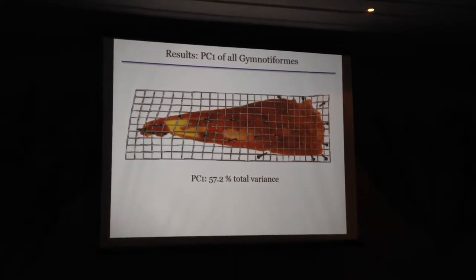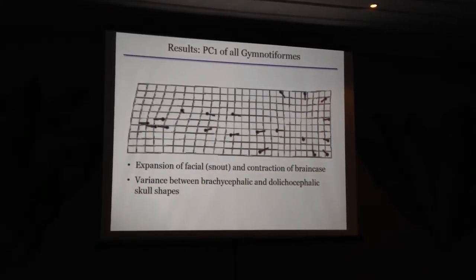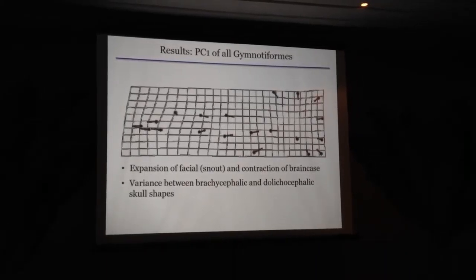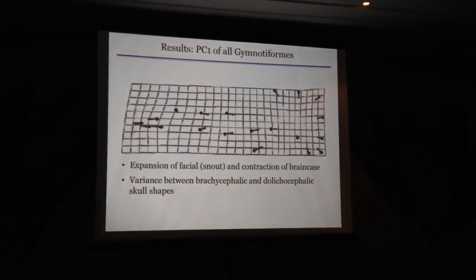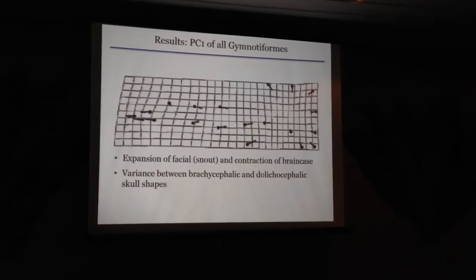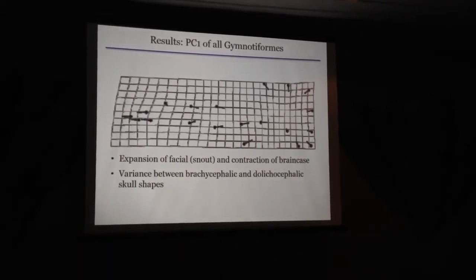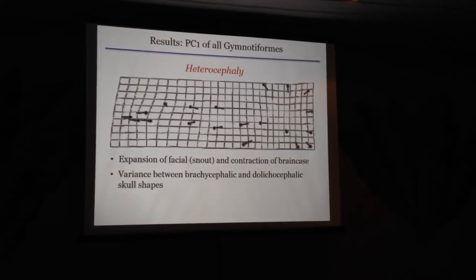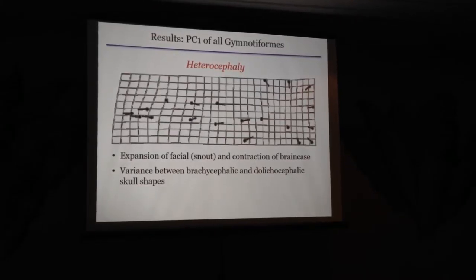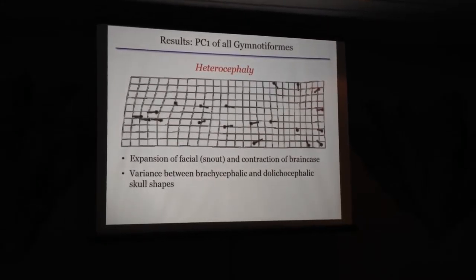Here is the ball-and-stick model showing PC1. In this model, you can see there's an expansion of the facial region — this is the Sternarchorhynchus dolichocephalus — an expansion of the snout region, and a contraction of the braincase. That combination of features is what brachycephalic to dolichocephalic means, and we're going to refer to that as heterocephaly. It's a widespread phenomenon within species during growth, at the population level, and across species within phylogeny. So it seems to need a nice shorthand.